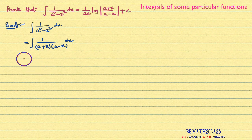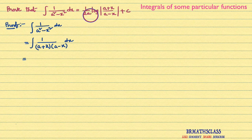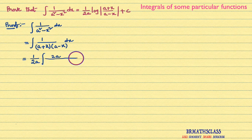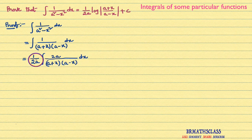What is that trick? Look here — you observe the answer. In the answer, 1 divided by 2a is there. We know that 2a is constant. So what I will write here is 1 divided by 2a, integral of — in the numerator also I will write 2a — divided by a plus x into a minus x dx. You observe here, if 2a and 2a get cancelled, again you will get the same step.